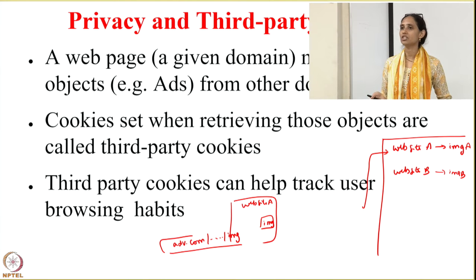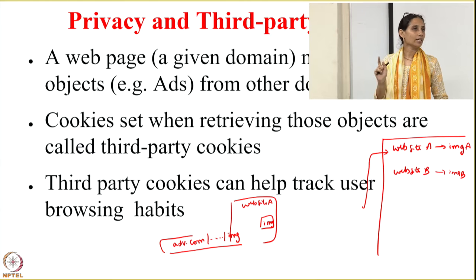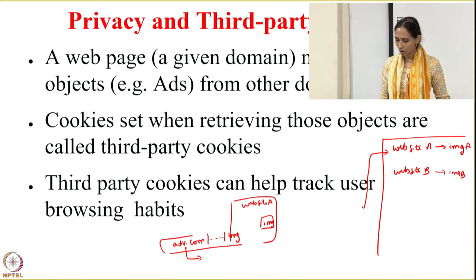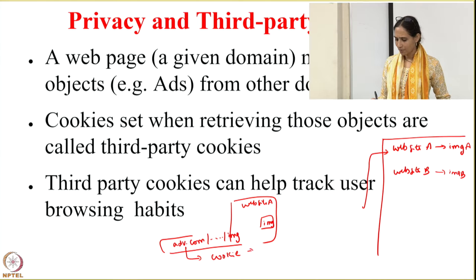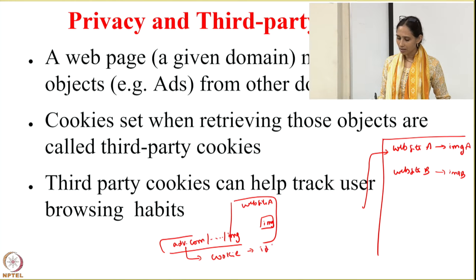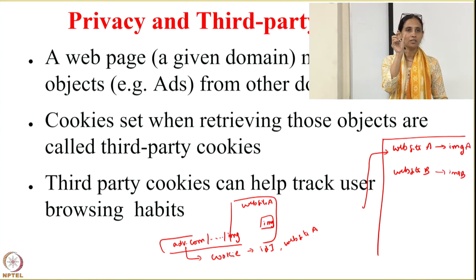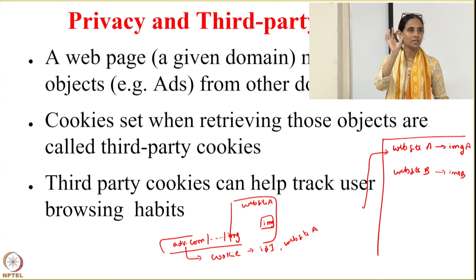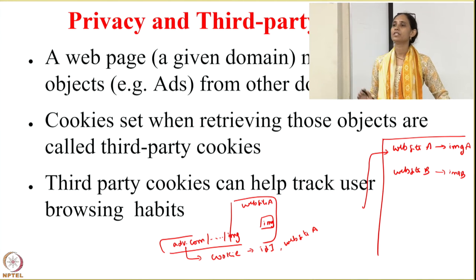The browser parses the HTML, sees the image, and contacts the advertising website to download it. If you are contacting this advertising agency for the very first time, this advertiser will set a cookie. Within that cookie it may note some information. He may not know your username yet, but he will say some user with id 1 has visited website A. He knows this because that image was embedded uniquely in website A, so if someone requests that image it means they visited website A.